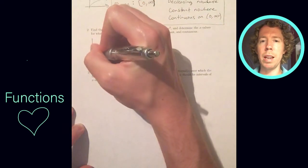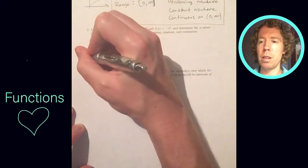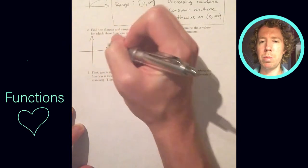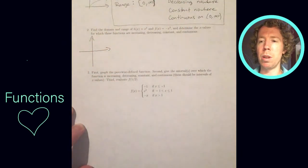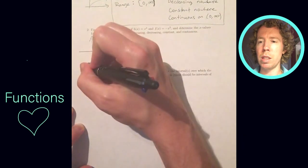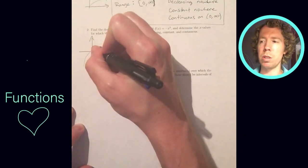All right, we're going to graph x cubed and negative x cubed on the same graph. Those are very simple graphs, basic cubic functions. So I'll sketch both of those and then we're going to answer some questions about them.